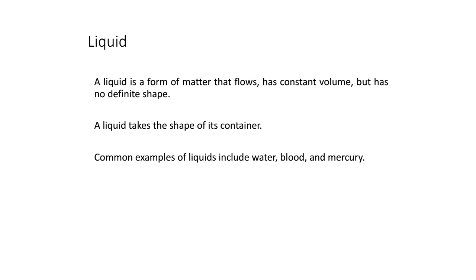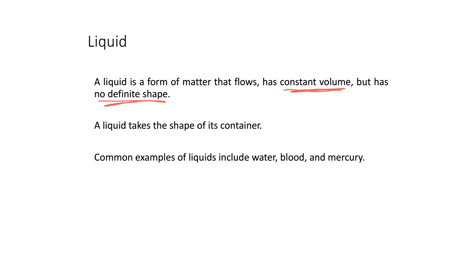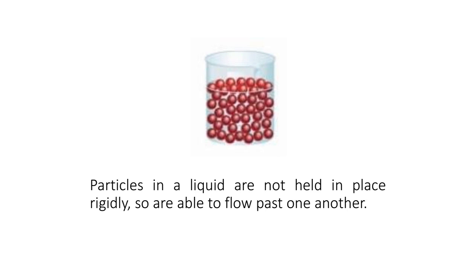A liquid is a form of matter that flows and has a constant volume, but has no definite shape. A liquid takes the shape of its container — when you drink something, you have to put it in a glass or some container. Common examples of liquids include water, blood, and mercury. Particles in a liquid are not held rigidly in place, so they are able to flow past one another; they're not as close together as in a solid.